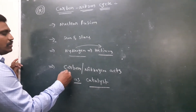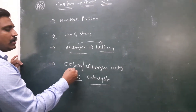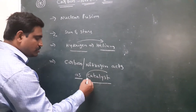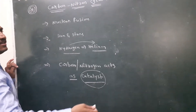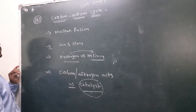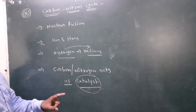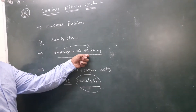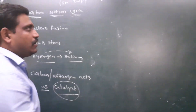Now I will write the equations. In the Carbon-Nitrogen cycle, Hydrogen will be converted into Helium. Carbon and Nitrogen act as a Catalyst. In the Carbon-Nitrogen cycle, Hydrogen will be converted into Helium, and Carbon and Nitrogen act as a Catalyst.